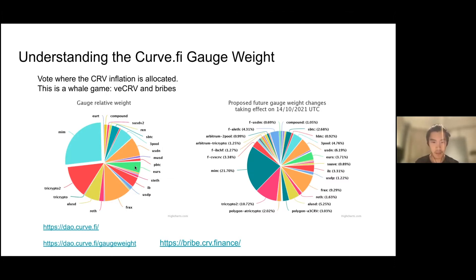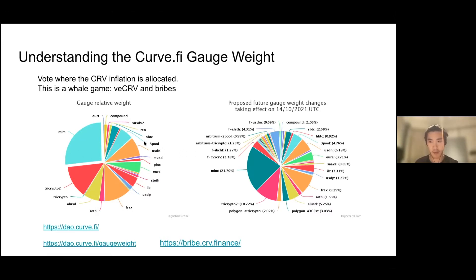As you can see here, there are a bunch of different protocols. MIM got really popular and ended up taking a decent chunk of the weight. You basically need a ton of Curve to be able to influence this vote and accumulate boost, so Convex pretty much dominates that space.